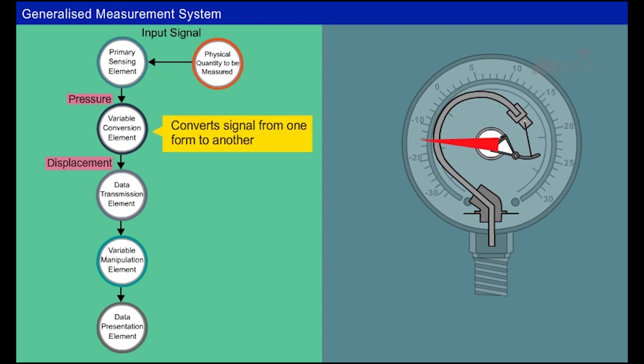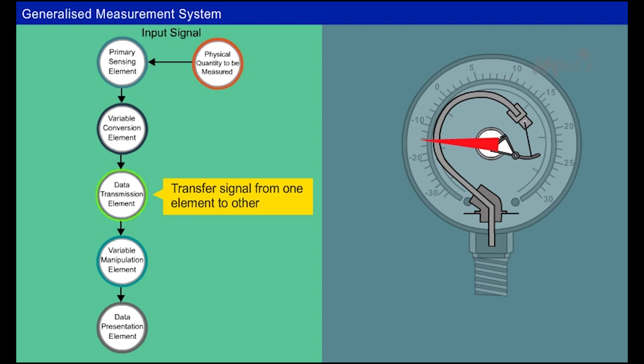The mechanical linkage connecting the Borden tube and the gearing arrangement contributes to the data transmission element. The main function of the transmission element is to transfer the signal from one element to another. The mechanical linkage transfers the displacement from the Borden tube to the gearing arrangement.